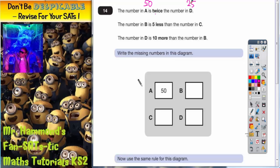50 is twice 25. That works out, doesn't it? So if A is 50, D must be 25. And that's the first clue sorted.